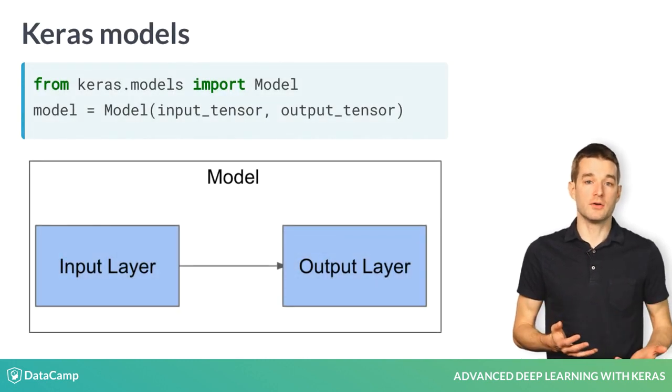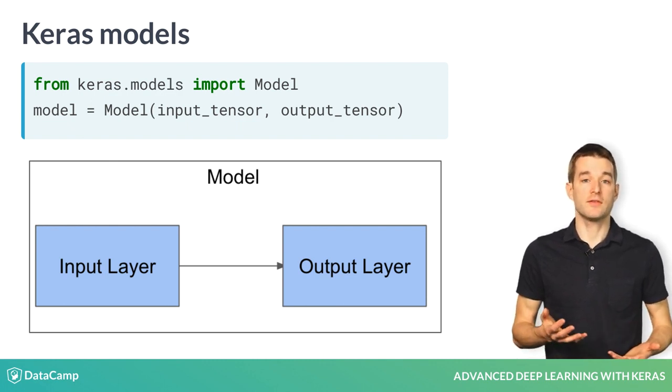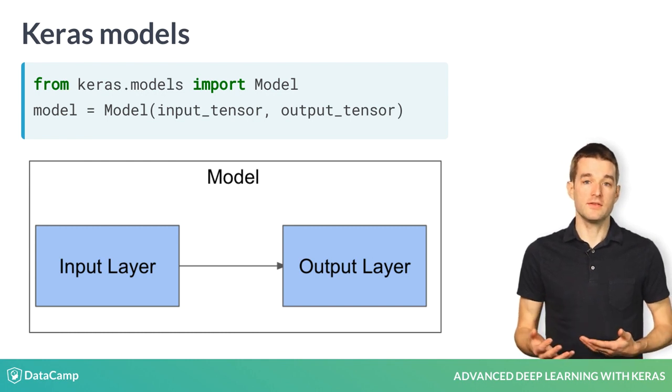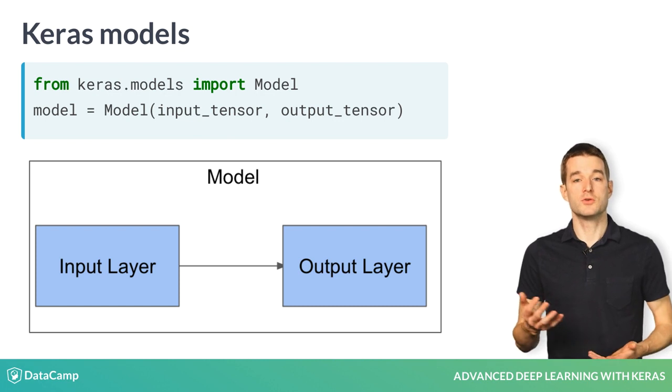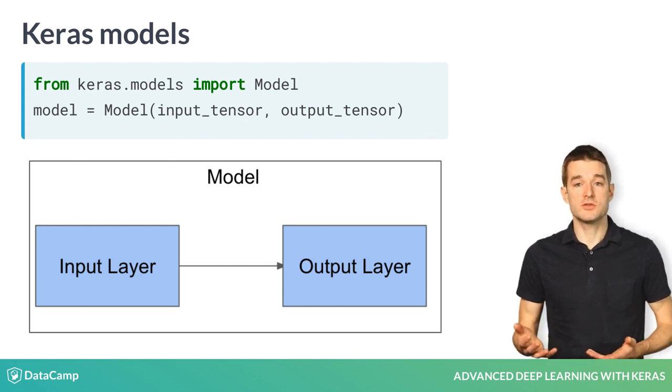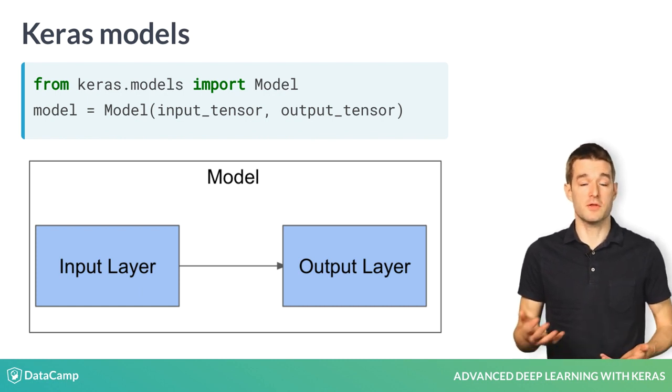To build a model, you simply import the model class from keras.models and pass your input and output to this class. In this case, we only have a single input and a single output, which we pass directly to the model. However, later in this class, you will work with multiple inputs and multiple outputs, in which case you will pass lists of inputs or lists of outputs to the model.